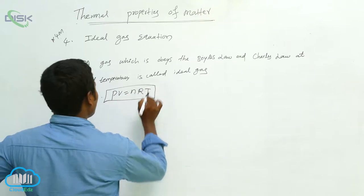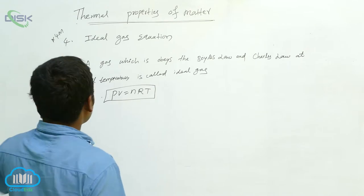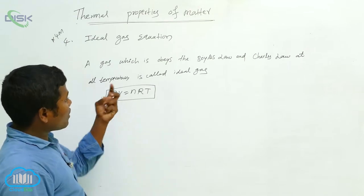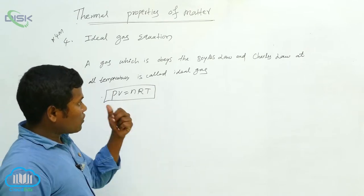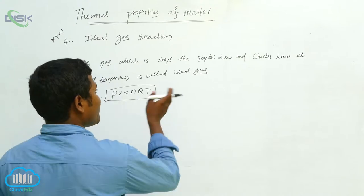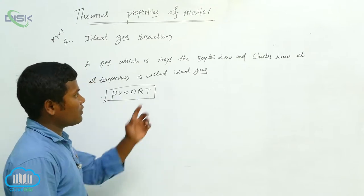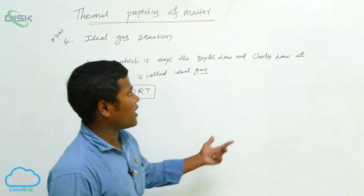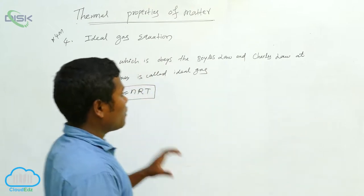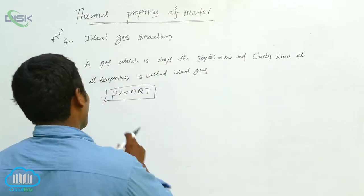Now we are going to derive this relation. What does ideal gas mean? What laws should it follow? That is Boyle's law and Charles' law. We already said about Boyle's law. What is the relation between Charles' law and Boyle's law? We have to take the relation and derive the formula.